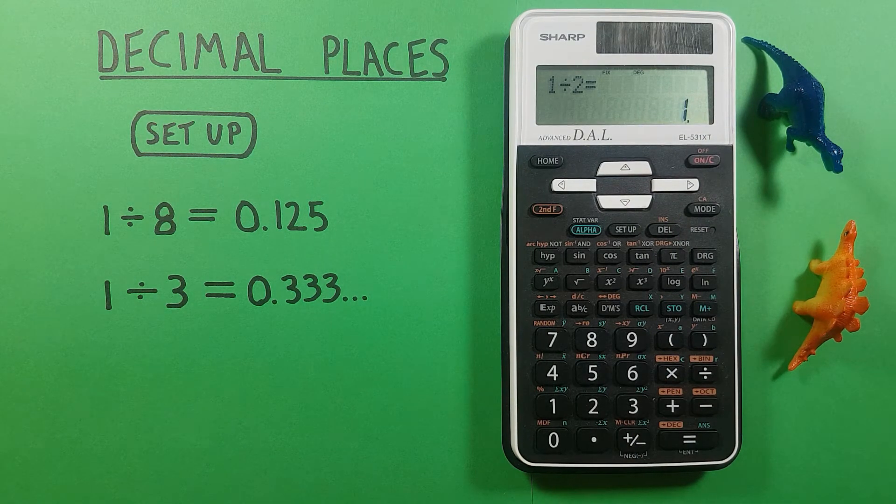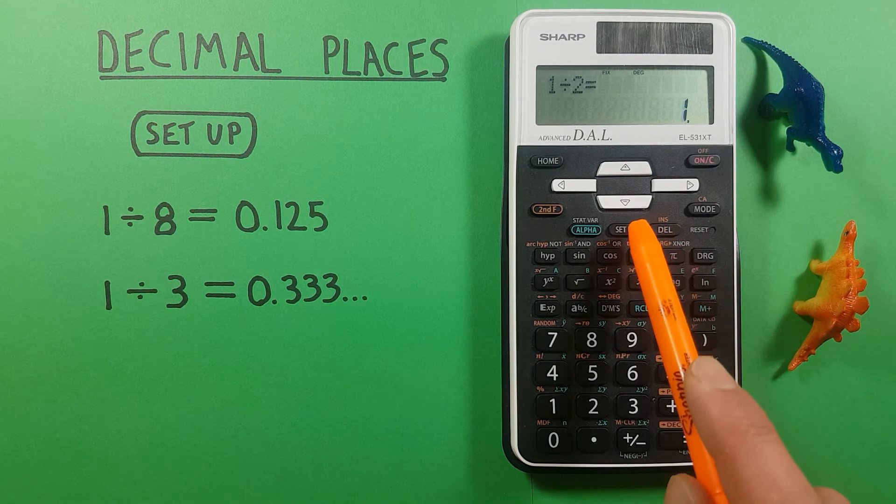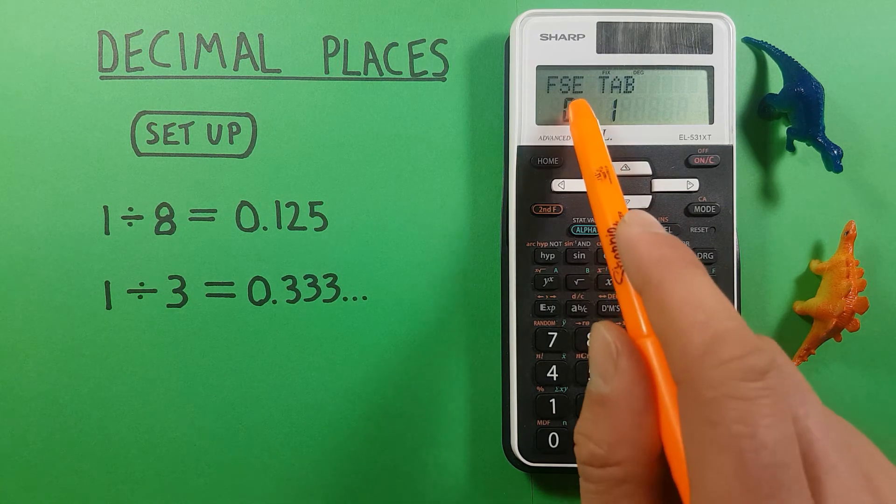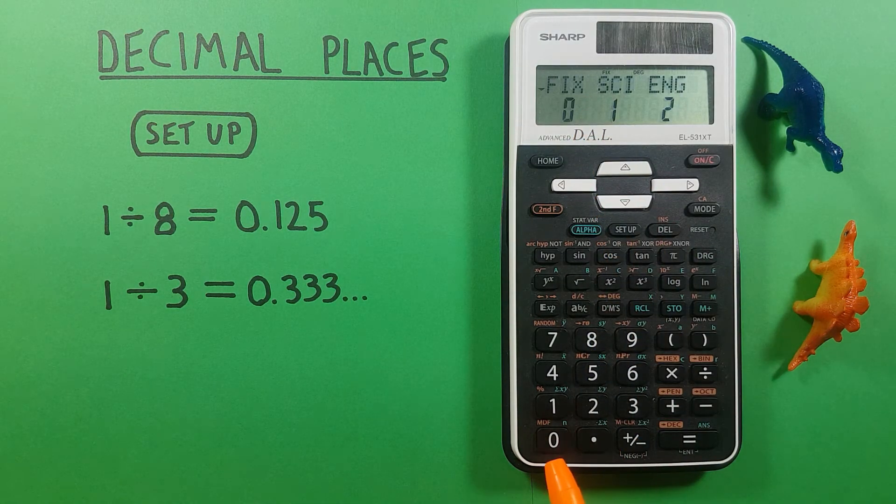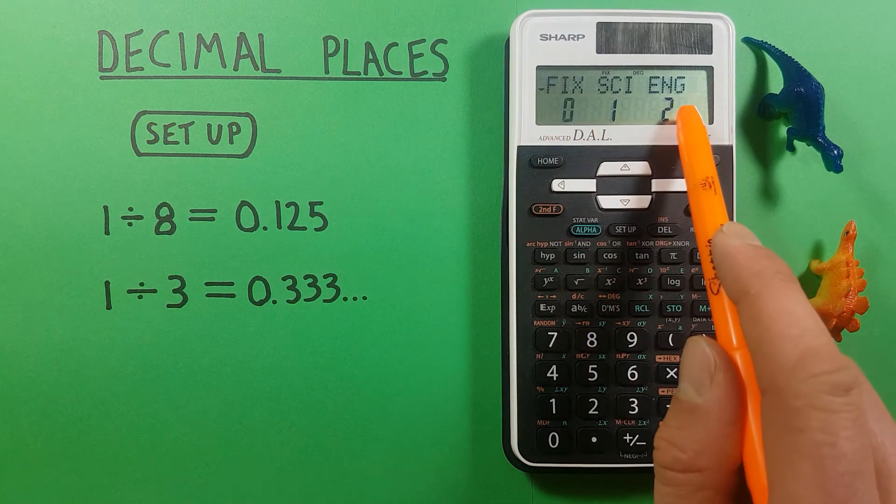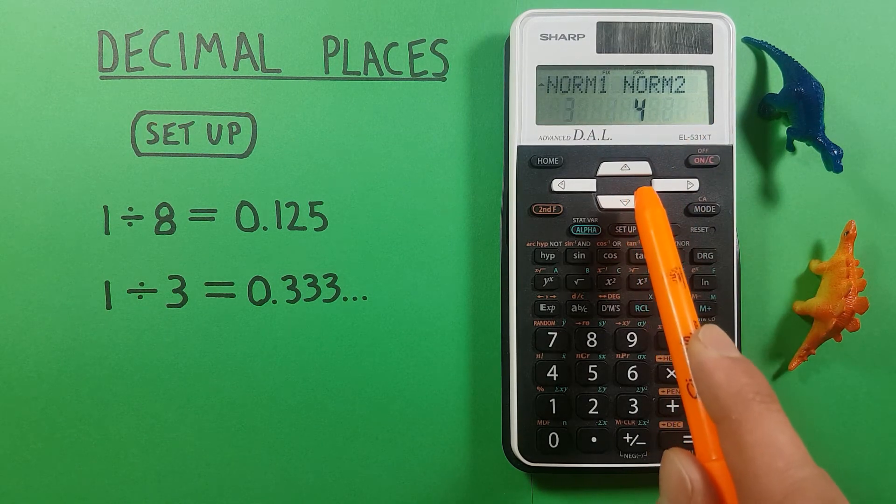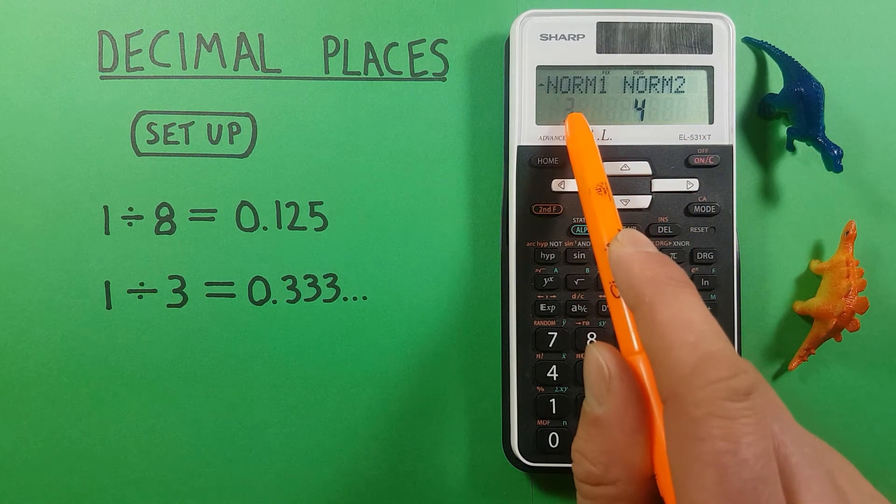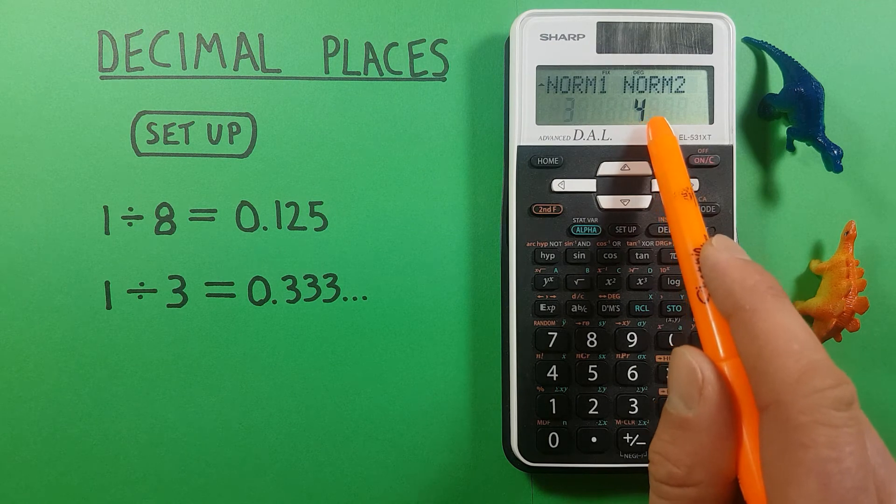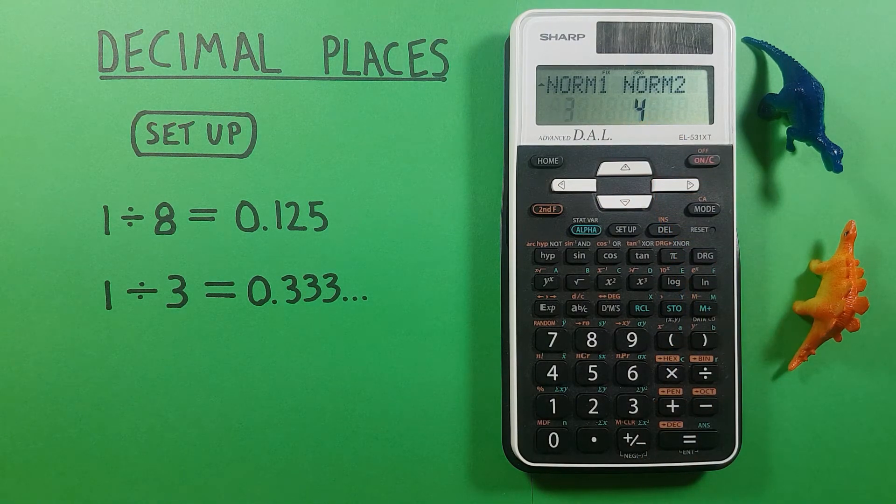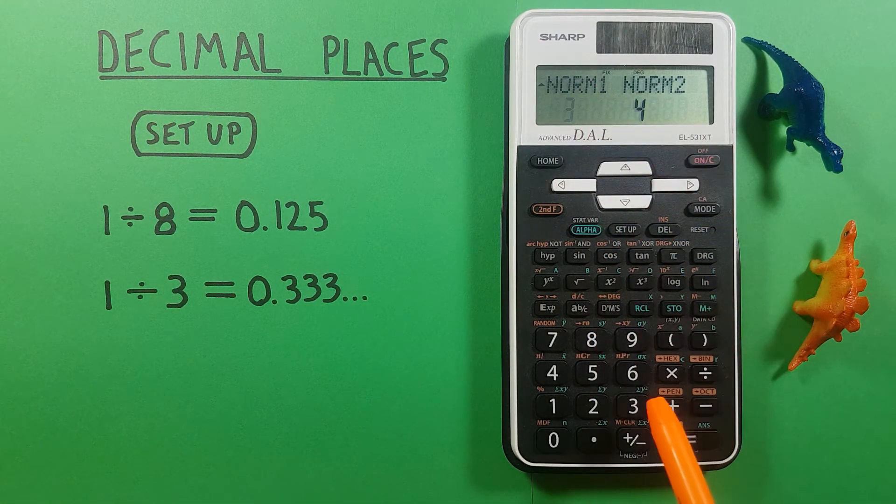Now if we're done with this and want to go back to our normal mode we press setup again and then zero for the FSE and we're at this menu. Now we want to scroll down one so that we see normal one and normal two on our screen. We want to select normal one so we press three.